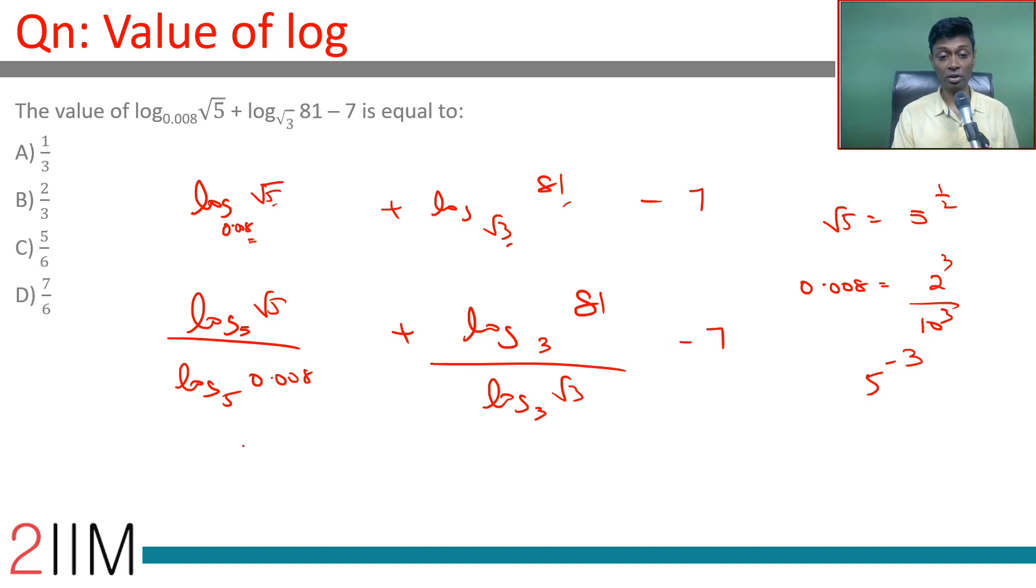Log root 5 is 1 by 2, divided by minus 3. 5 power minus 3 is 0.008, so log 0.008 base 5 is minus 3.